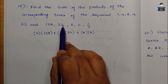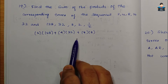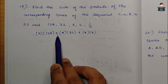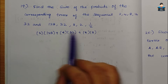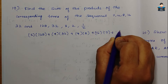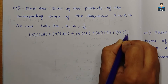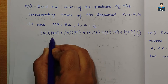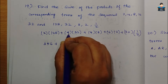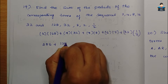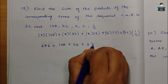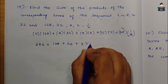Continuing: + 16×2 + 32×(1/2). Computing each product: 2×128 = 256, 4×32 = 128, 8×8 = 64, 16×2 = 32, 32×(1/2) = 16. So the required sum is 256 + 128 + 64 + 32 + 16.